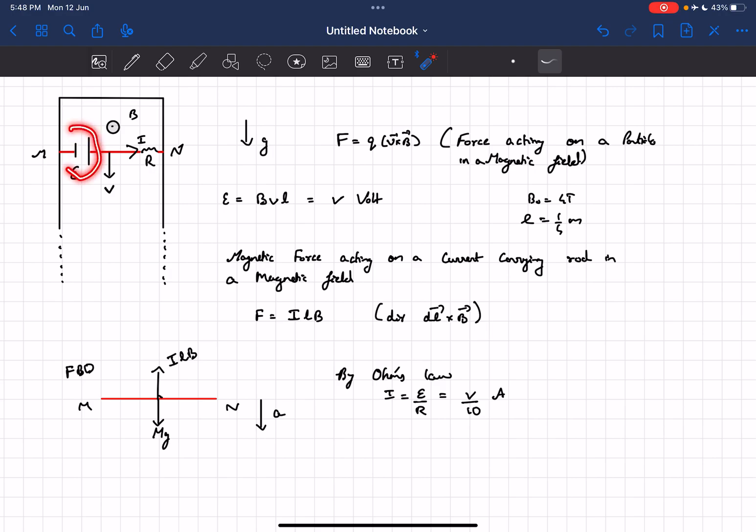Which means the current I would be flowing in this direction because we have a resistance here. So by Ohm's law we can find the magnitude of the current I as E by R, and that would numerically be equal to v by 10.